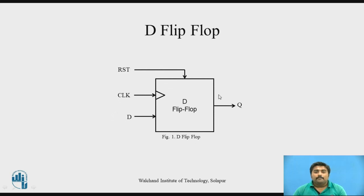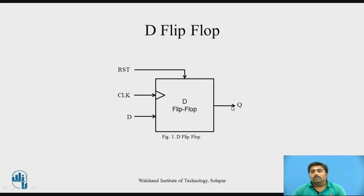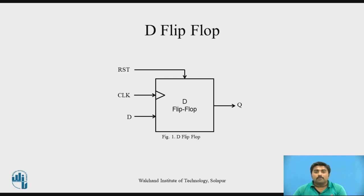As you can see, there are inputs and outputs. The inputs are clock, D, and RST — that is, reset — and the output is Q. The working of the D flip-flop is that whatever input is applied on D will appear on the output Q whenever a clock event occurs. This depends on whether you are using a positive-edge or negative-edge clock, which is specified while writing the VHDL module.